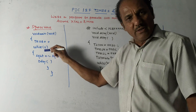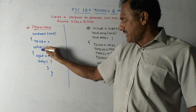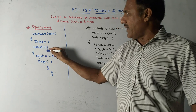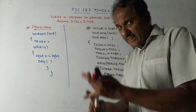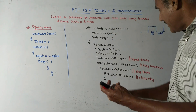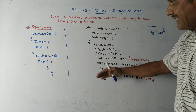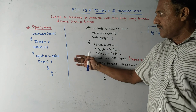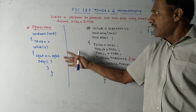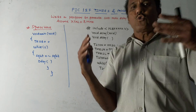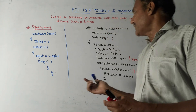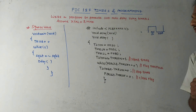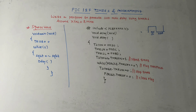We apply a delay for the on period, then again the same delay for the off cycle. This repeats because we are using the while(1) instruction. This is about the main program. This is the way you can write a program using timers. That's it for today's session - thank you for watching this video.